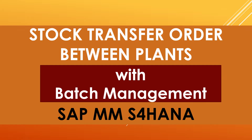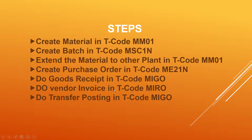Hello everybody, Swamina here. Today we are going to do stock transfer order between plants with batch management in SAP MM. The steps are: create a material in MM01, create a batch in MSC1N, extend the material to another plant in MM01, create a purchase order, create a goods receipt, do invoice verification, and finally do a transfer posting in MIGO transaction with batch.